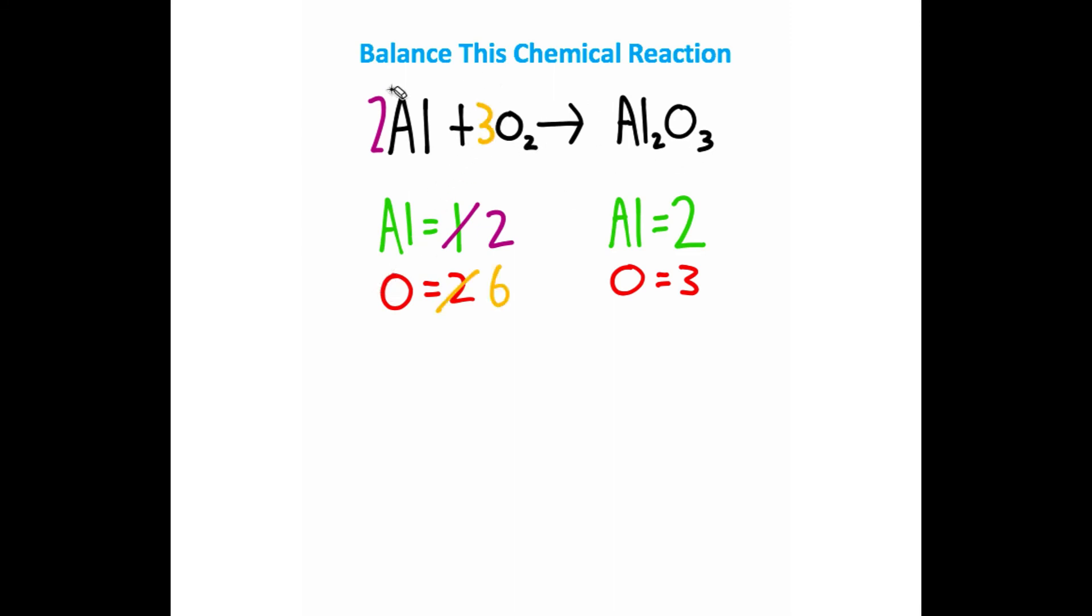So I can take a 3 and put it on this O2 right here, and that's going to give me six oxygens in the reactants. But to get six oxygens here, I have to take a 2 and throw it on this entire compound, which will give me six oxygens here. So now the oxygens are balanced.